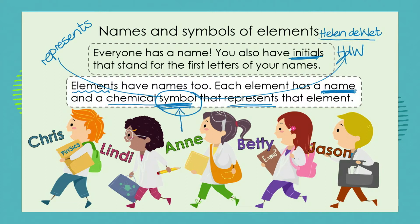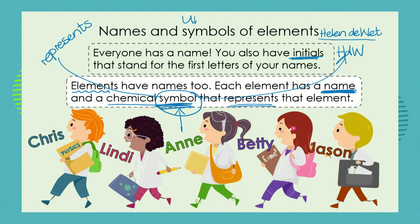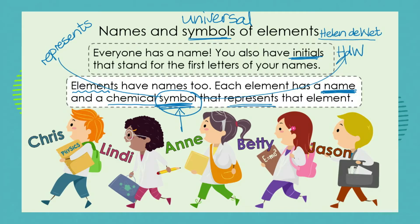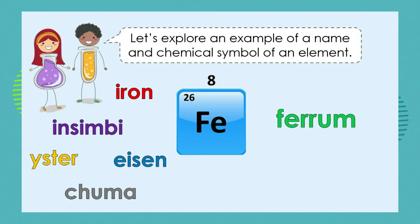A clock, for example, can be a symbol of time. My initials stand as a symbol for my full name. And so we find that elements have both a name and a symbol that represents the element. The symbol helps us to make sure that everybody's name for that particular element is understood. So we find that the symbol is what we call universal. No matter what language we are using to name the elements, the symbols are universal across languages. So let's explore an example of a name and the chemical symbol of an element.